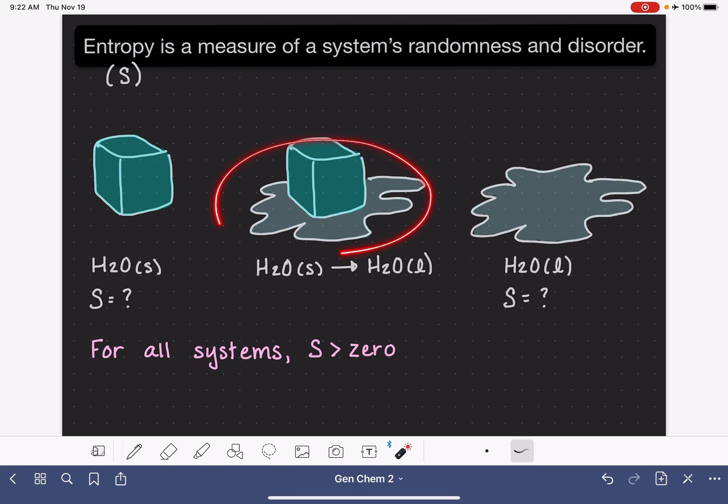Because this is a process, this is a situation where entropy is changing. So for this process or this chemical reaction, we would have not an entropy, but a change in entropy, because there is some sort of change to the randomness or disorder of the molecules as this ice cube is melting and becoming liquid water.